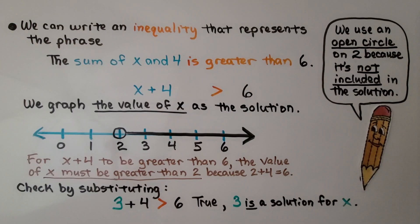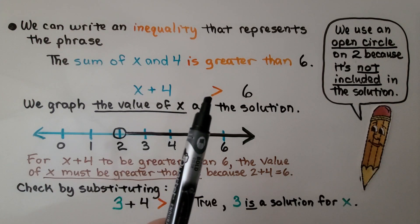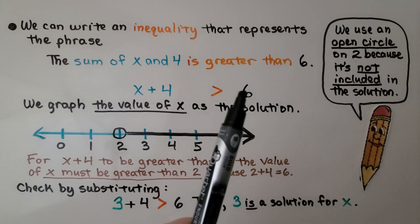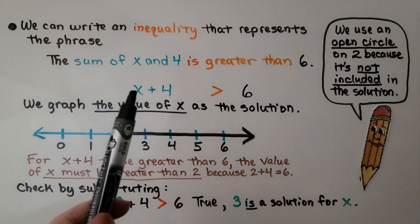We can write an inequality that represents the phrase the sum of x and 4 is greater than 6. The sum of x and 4 tells us it's addition, so we have x plus 4. We have the is greater than symbol and 6, and we graph the value of x as the solution.